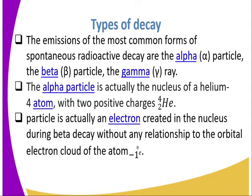The most common forms of spontaneous radioactive decay are: alpha, beta, and gamma radiation. An alpha particle is actually the nucleus of a helium atom.